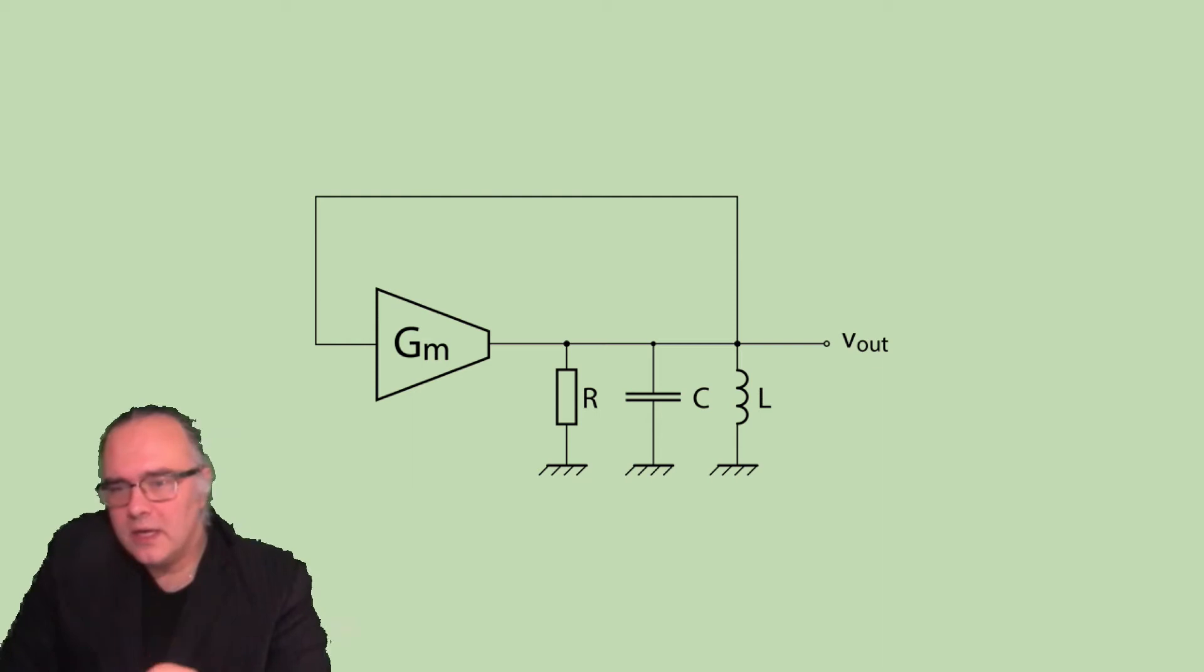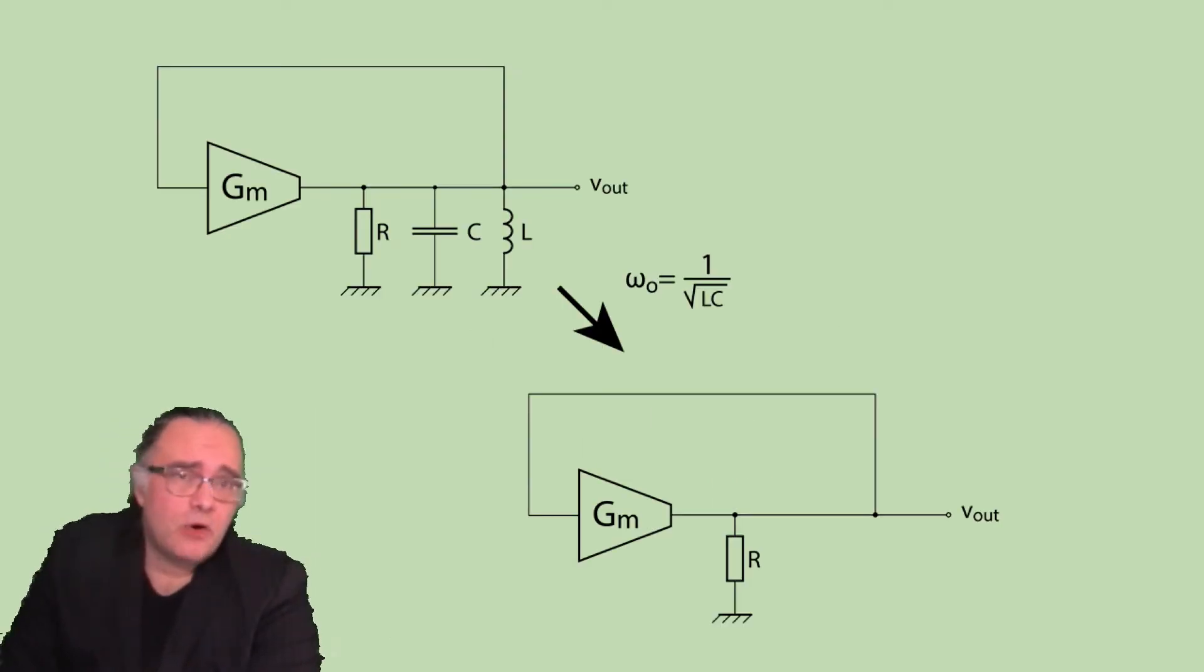Now there is one magical frequency called a resonance frequency equal to 1 over square root of LC.